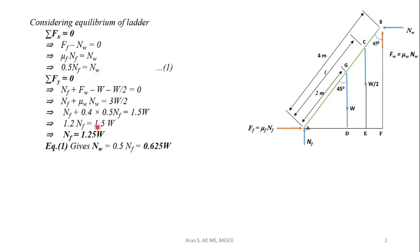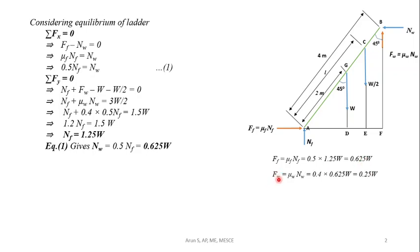Substituting into equation 1: NW = 0.5 × NF = 0.5 × 1.25W = 0.625W. The normal reaction at the wall is 0.625W. The friction force at the floor is FF = μf × NF = 0.5 × 1.25W = 0.625W. The friction force at the wall is FW = μw × NW = 0.4 × 0.625W = 0.25W.